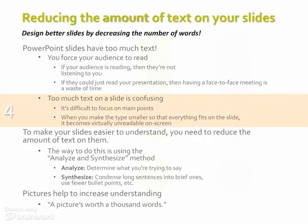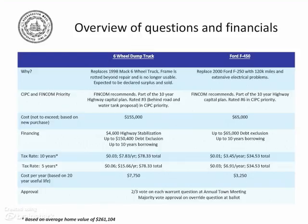We return to this slide to look at message 4: too much text is confusing. This message is similar to the previous one about forcing the audience to read, but it's a little bit different because it talks about obscuring the main points. I'm going to give you another example of the type you might encounter in a business presentation. This slide was part of a presentation meant to persuade voters to purchase two new trucks for their town. This table presents a thorough analysis with lots of data, making it totally unsuitable for a slide. It's great for a printed piece, but when looking at it on a screen, trying to read it, trying to listen to the presenter, and trying to come to conclusions about the data — that's a ton of work.